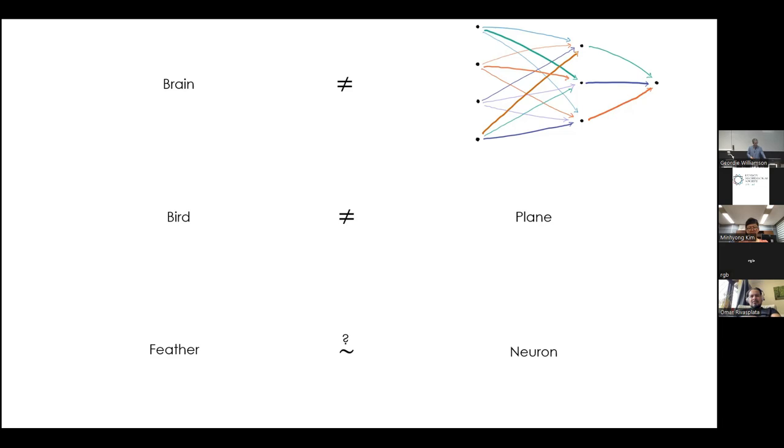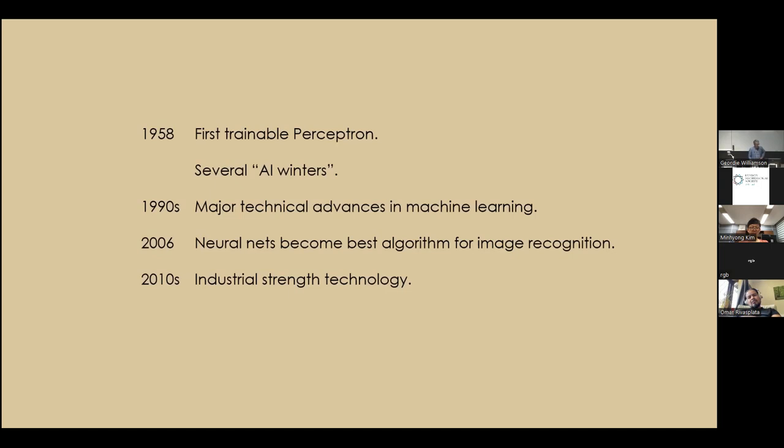And I have a very good friend, a neuroscientist in Singapore, who tells me that the attitude in neuroscience is that a neuron is perhaps like a feather. So it's something very beautiful that evolution has produced, but may not be essential for learning. So just a brief history of this subject. So in 1958, the first trainable perceptron was built, had several AI winters. And in 2006 was the first time that neural nets became the best algorithm on a task which is widely regarded as important. So this was on image recognition tasks. And in the 2010s, it's become industrial strength technology. And nowadays, you've probably used it a few times today without realizing it.